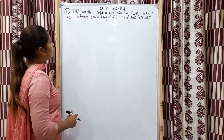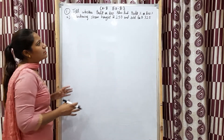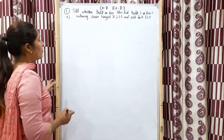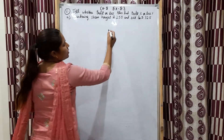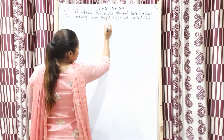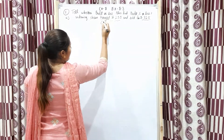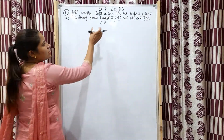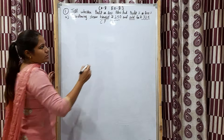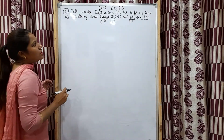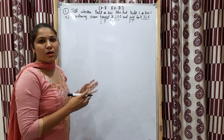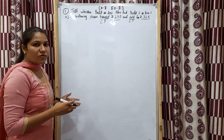I have written the first part. We have to tell whether there is a profit or loss, and whether it is profit percentage or loss percentage. See the question: gardening shares bought for rupees 250, sold for rupees 325. If it is written 'bought' it means that is your cost price; 'sold' means that is your selling price. First we have to see which one is bigger — whether cost price is bigger or selling price is bigger — then we can say it is profit or loss.